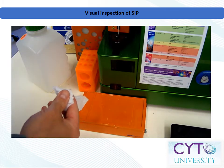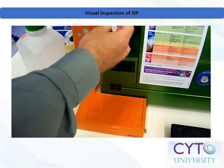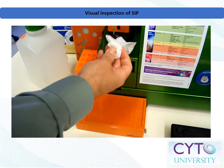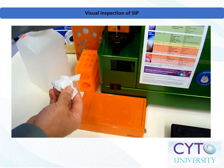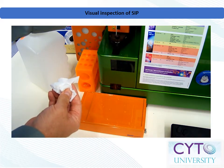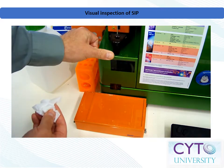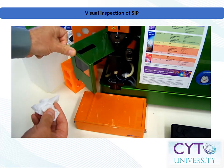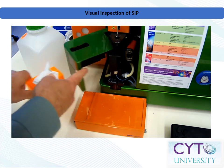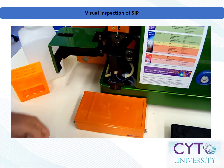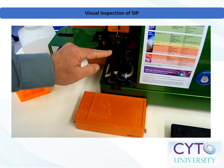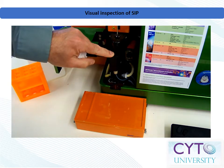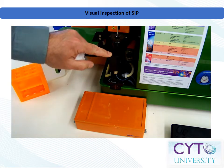For systems such as the example shown here, the needle arm is responsible for delivering the sample to the sample injection port. For this system, both the needle arm and sample injection port should be checked and appropriately cleaned.